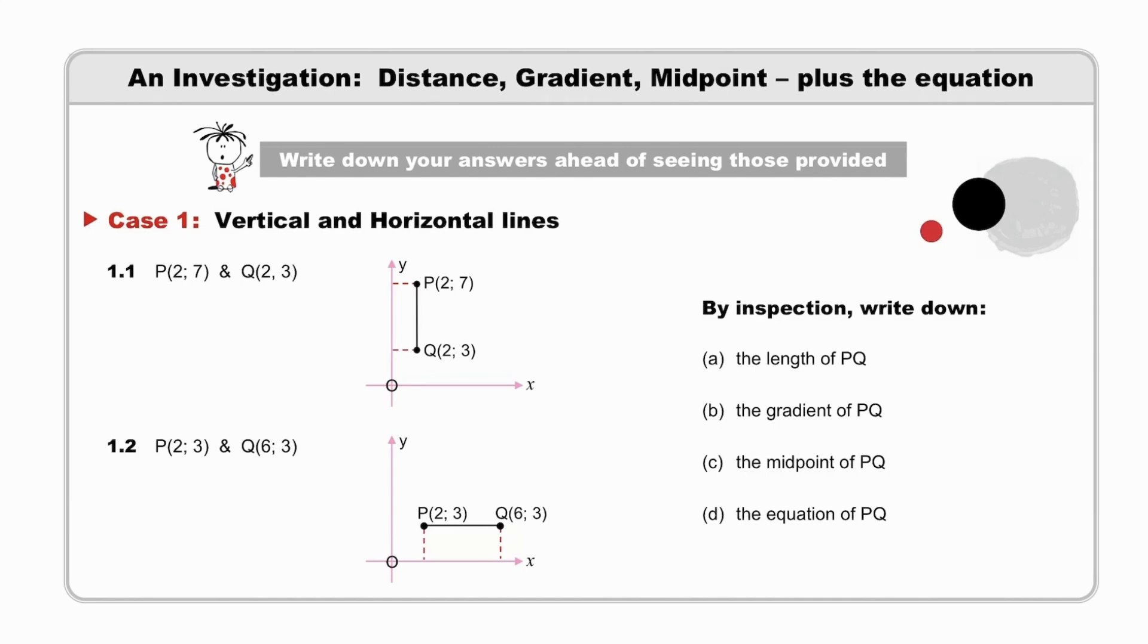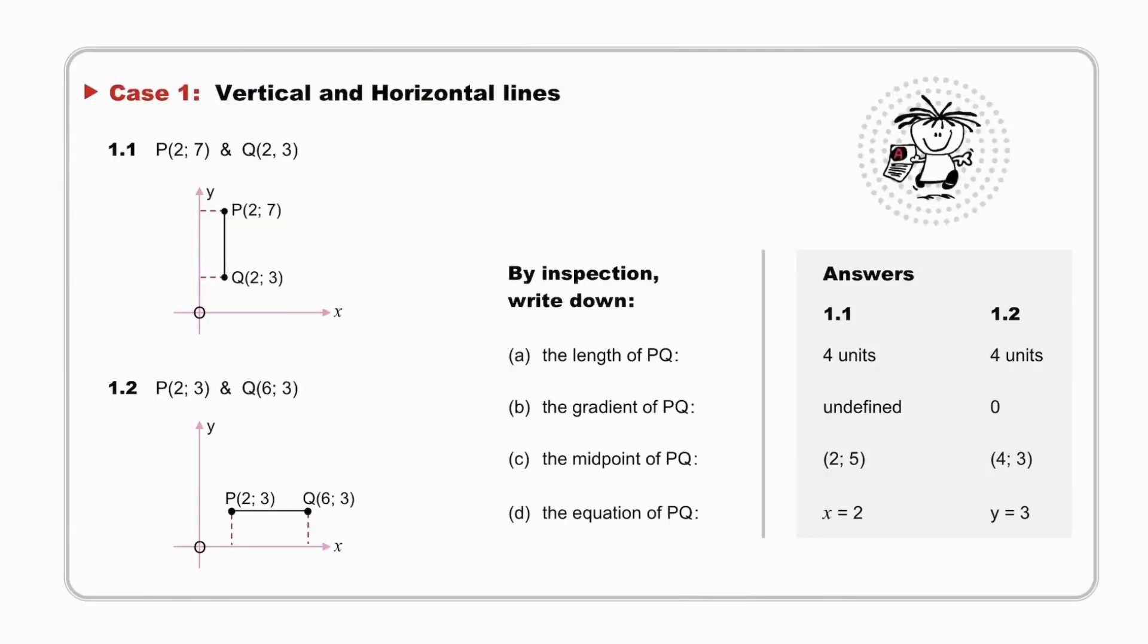In each case, by inspection, write down the length of PQ, the gradient of PQ, the midpoint of PQ, and the equation of PQ. Pause while you do so. Pause to mark your answers. The major question here is, did you use or need any formulae? Rather, observe the sketch, apply your own thinking, and just write down the answers.